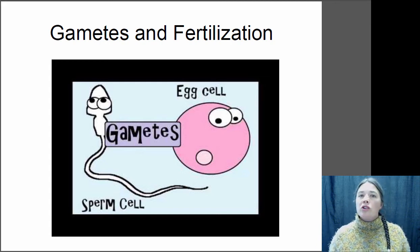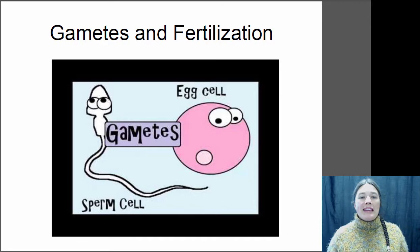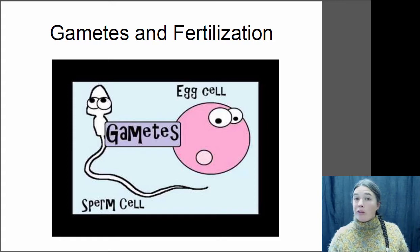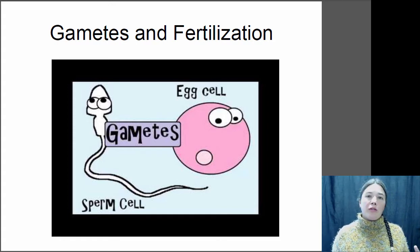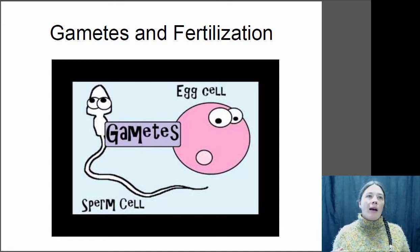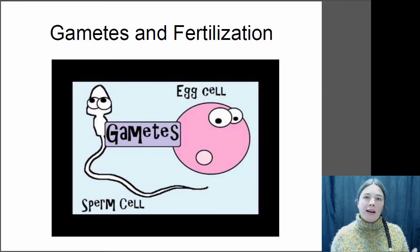Hi, this is Dr. Claire, and this is our lecture on gametes and fertilization. The gametes are the sperm and the egg. When you're going through sexual reproduction, you have to produce cells that will combine with cells from another individual in order to form a new offspring. We're going to talk about how these gametes form and how they come together to be fertilized, and a little bit about development.